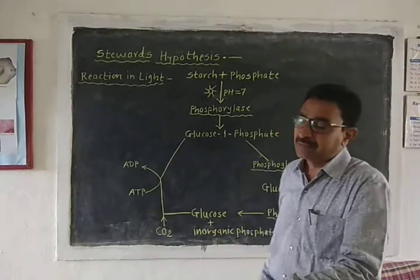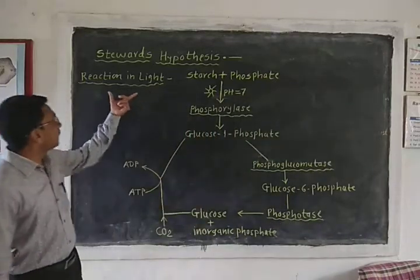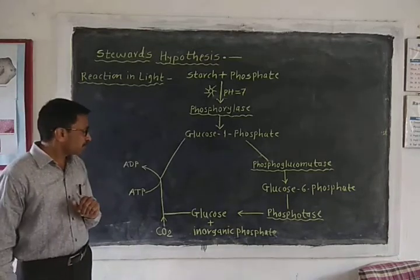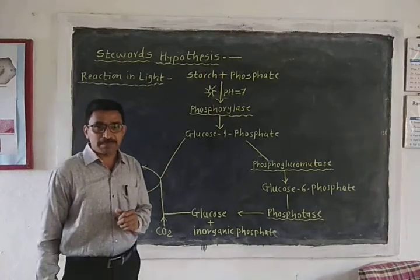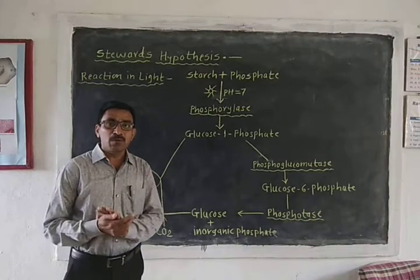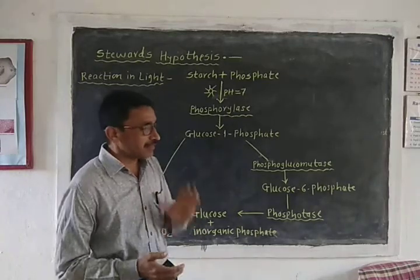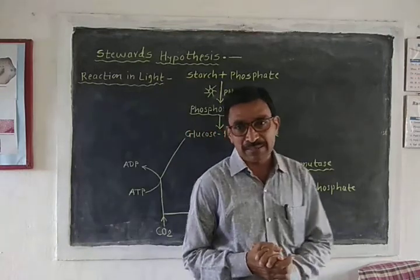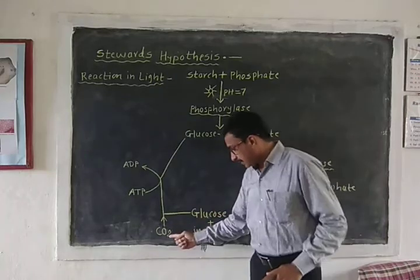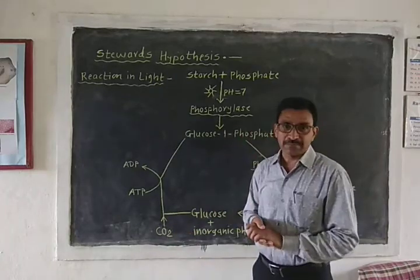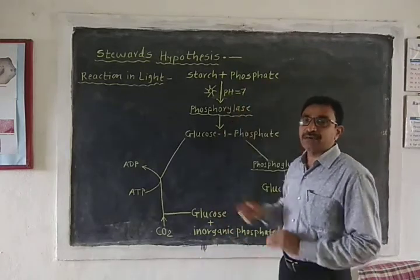During daytime, in light, the guard cells perform the function of photosynthesis because of the presence of chlorophyll pigments in the guard cells. Because chlorophyll pigments are present in the guard cells, they perform the function of photosynthesis. During daytime, they absorb carbon dioxide, and due to this, the pH of the guard cells becomes increased.